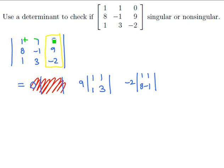Finally, using the checkerboard mnemonic, we see that we would have a positive in front of the 0, a negative 9, and then a positive negative 2 as the signs for our cofactors. So that means we have negative 9 times the matrix 1, 1, 1, 3, minus 2 times the matrix 1, 1, 8, minus 1.